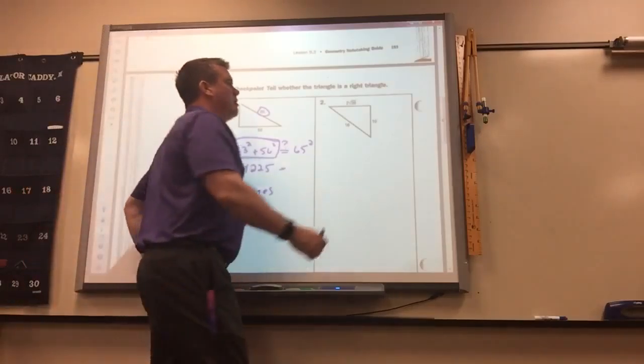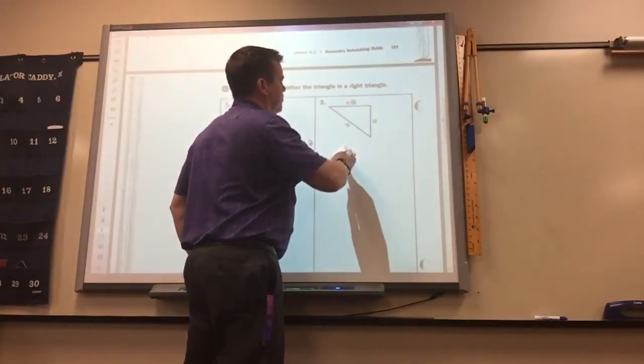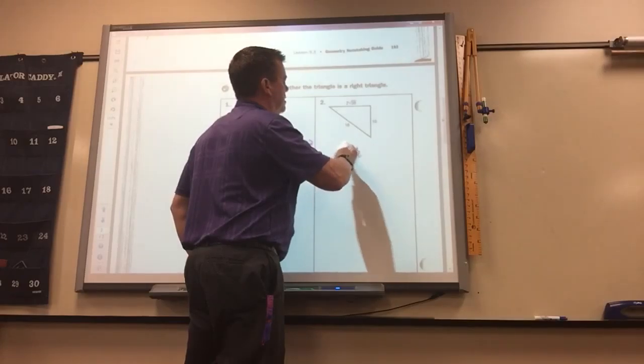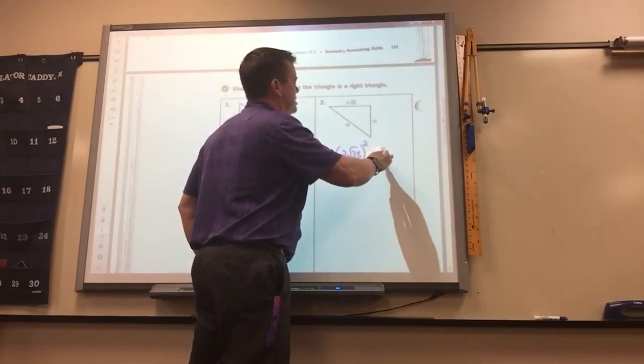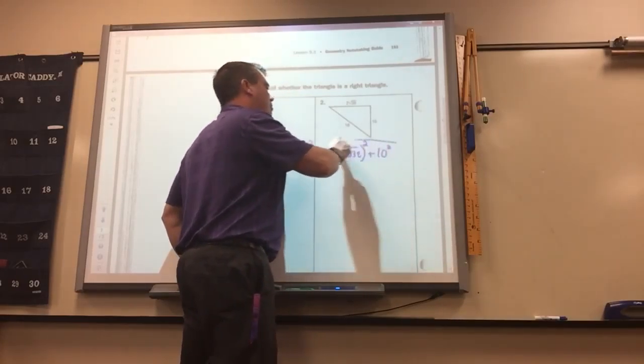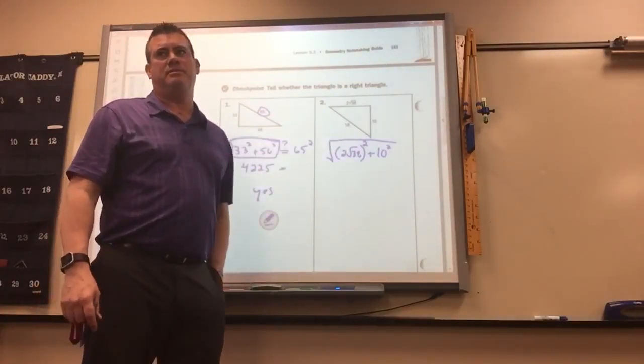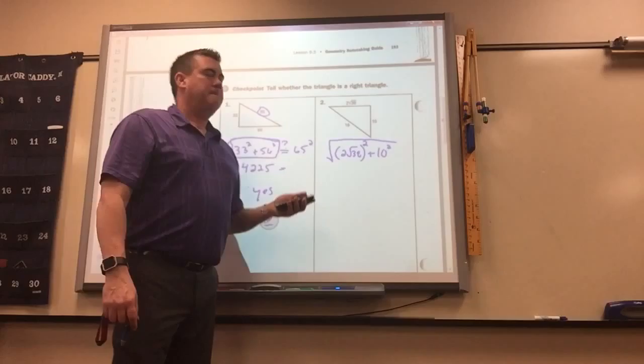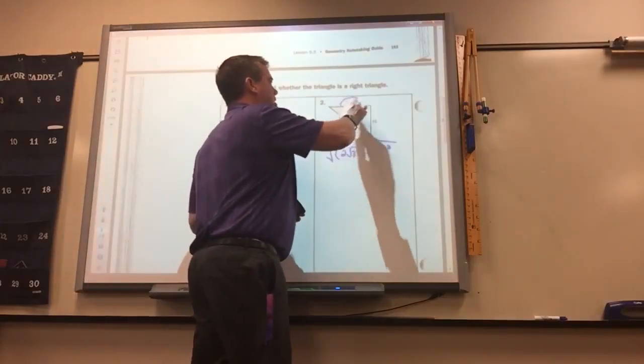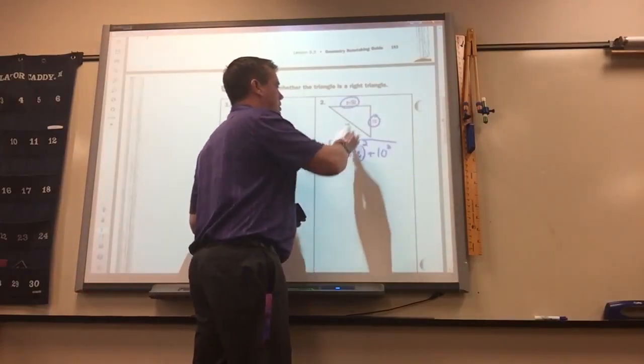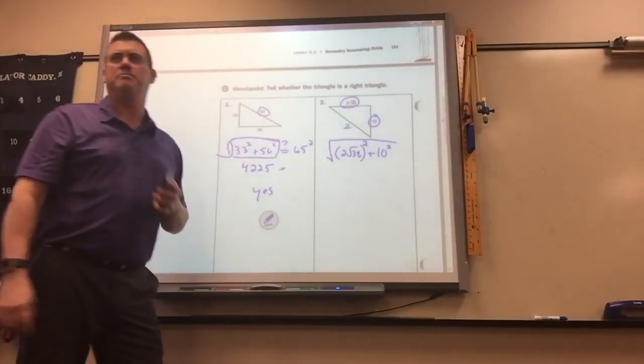So you can do the same thing here. 2√38 squared plus 10 squared. And then really all you've got to do is hit the square root button to see if you end up at 16. Because a squared plus b squared, square root it, should equal the hypotenuse.